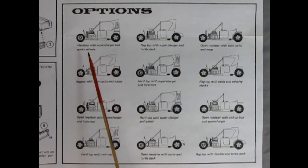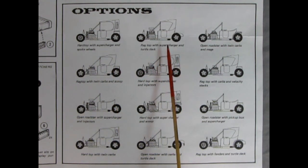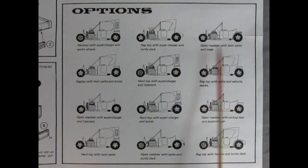Here we get all the different options you can build with your switchers car: hardtop with supercharger and spoke wheels, ragtop with supercharger and turtledeck, open roadster with twin carbs and mags, ragtop with twin carbs and scoop, hardtop with supercharger and injectors, ragtop with carburetors and velocity stacks, open roadster with supercharger and injectors, hardtop with supercharger and scoop, open roadster with pickup box and supercharger, hardtop with twin cams, open roadster with carbs and turtledeck, and a ragtop with fenders and a turtledeck. Which one would you build? Okay Trevor, show us the plastic parts.